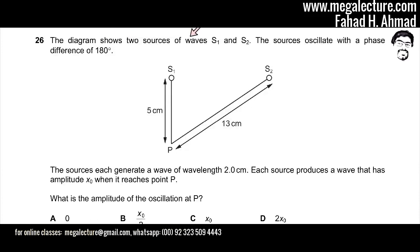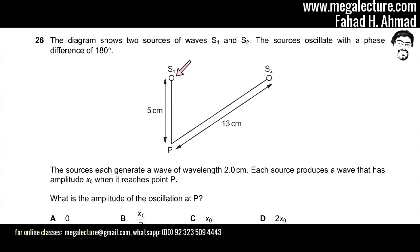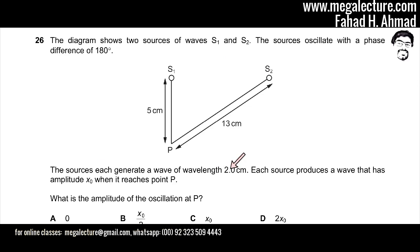The diagram shows two sources of waves, S1 and S2. The sources oscillate with a phase difference of 180 degrees, which means that if one source is producing a crest, the other would be producing a trough. The sources each generate a wavelength of 2 centimeters, so they are generating the same frequency. Each source produces a wave that has amplitude X0.